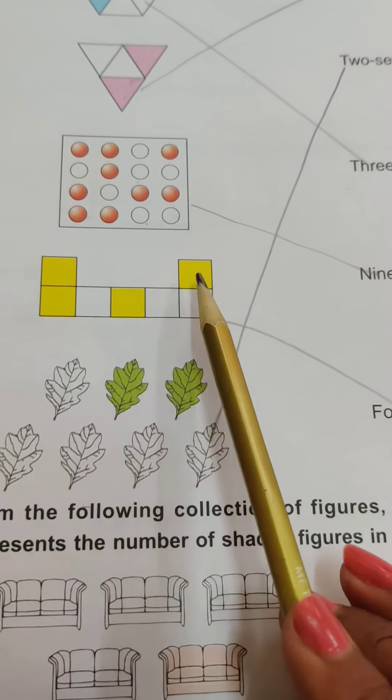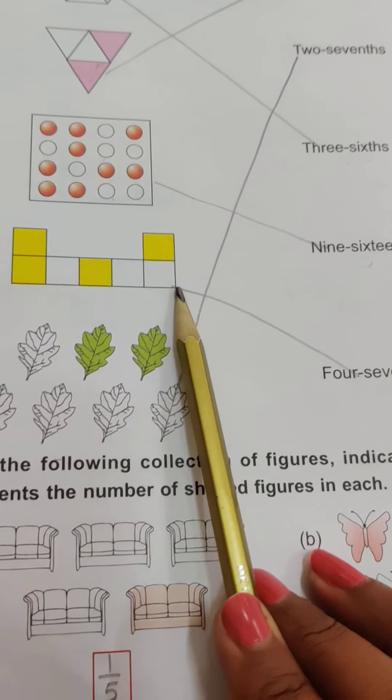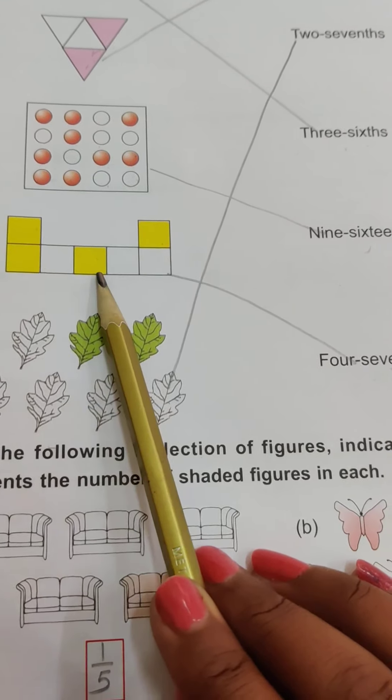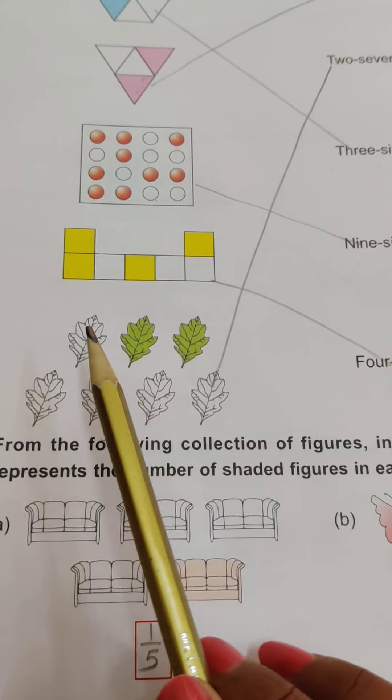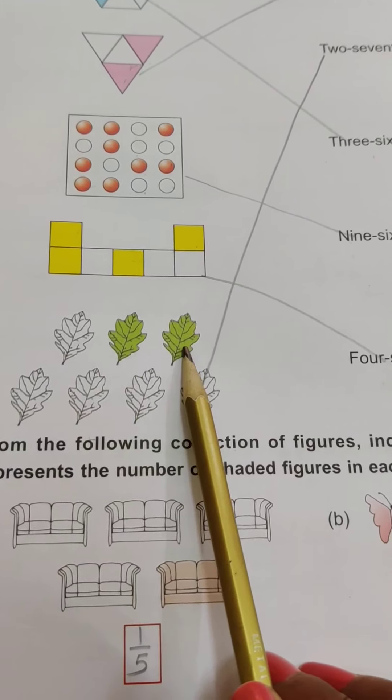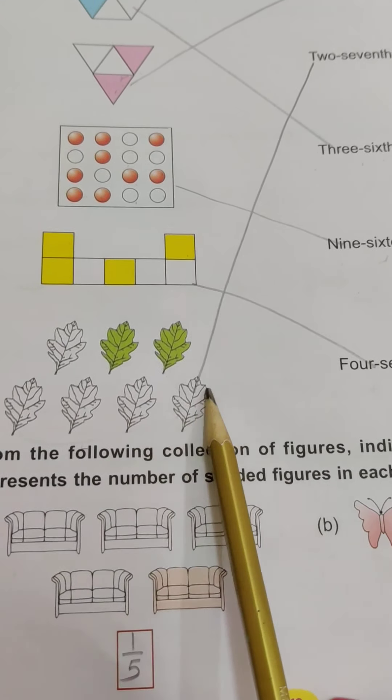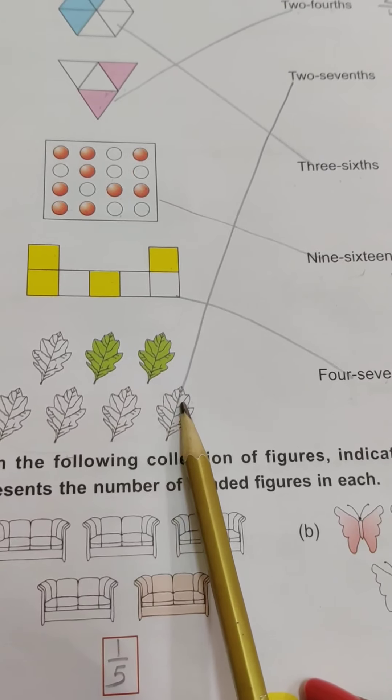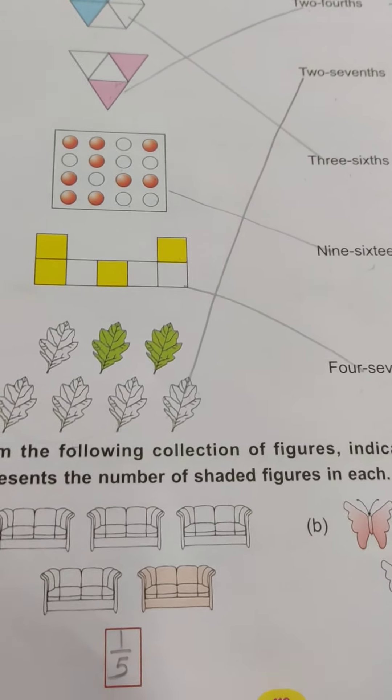Similarly, how many shaded? 4 and total is 7, so 4 by 7 means four-sevenths. Next, shaded is 2 and total is 7, means 2 by 7 means two-sevenths. Clear?